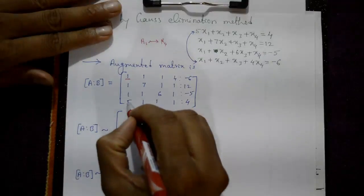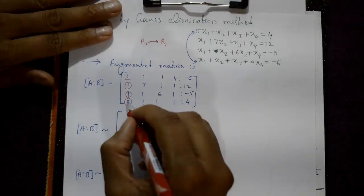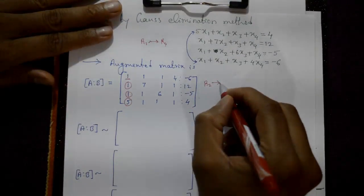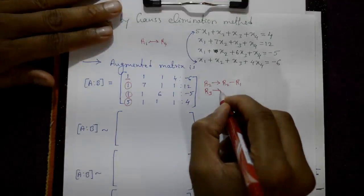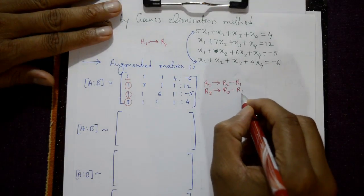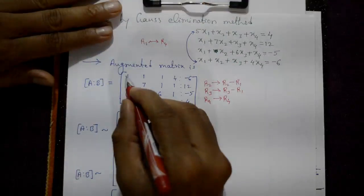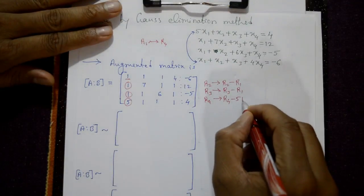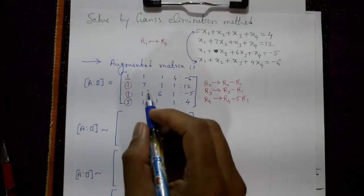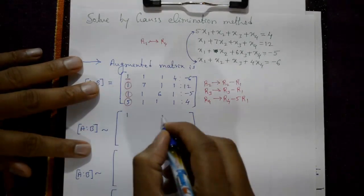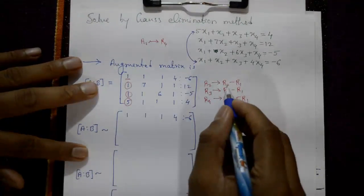The leading element in the first row is 1. The elements below it are 1, 1, and 5. We make those elements 0 using row operations on R2, R3, and R4: R2 = R2 - R1, R3 = R3 - R1, and R4 = R4 - 5×R1.